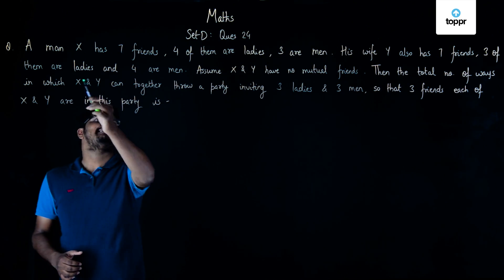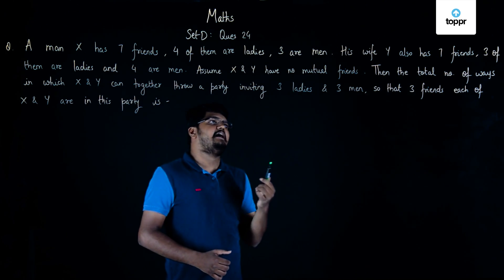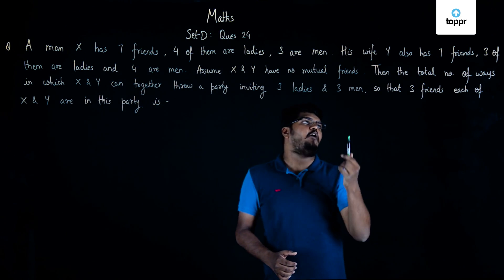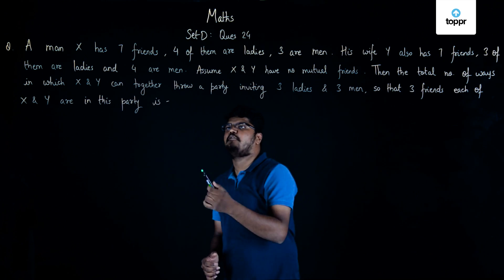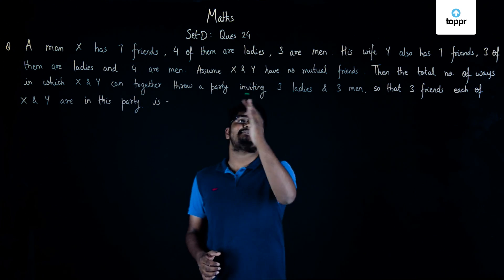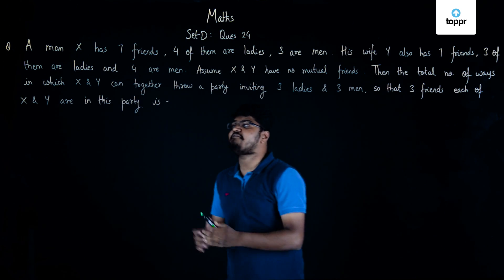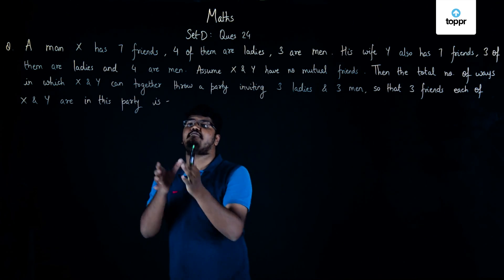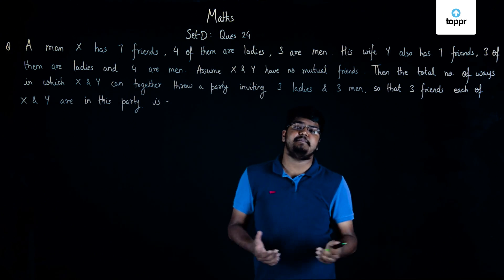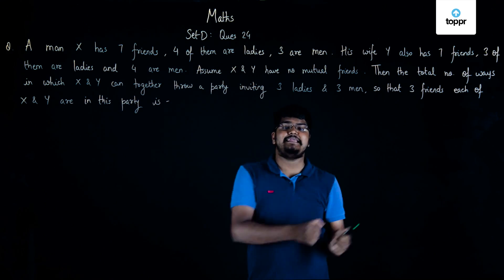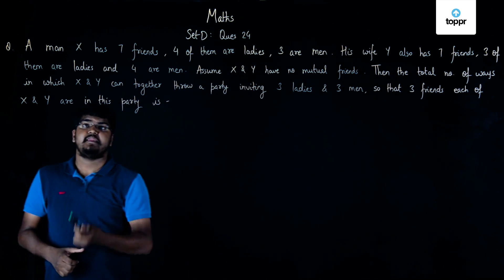The question is: a man X has seven friends, four of them are ladies and three are men. His wife Y also has seven friends, three of them are ladies and four are men. Assume that X and Y have no common friends. The total number of ways in which X and Y can together throw a party inviting three ladies and three men, so that three friends each of X and Y are in this party, is?